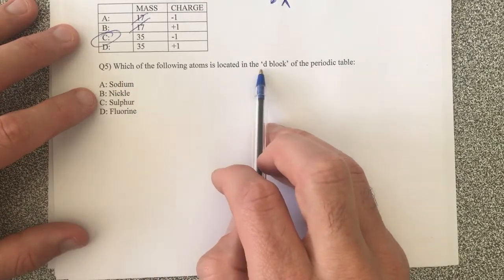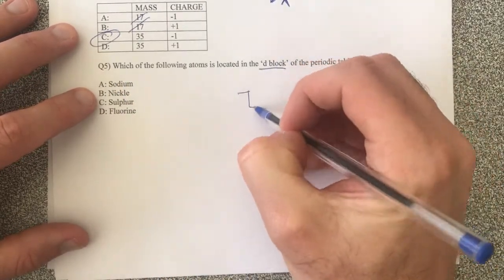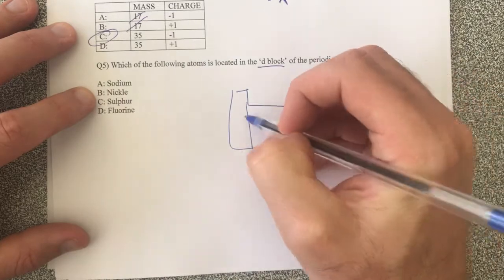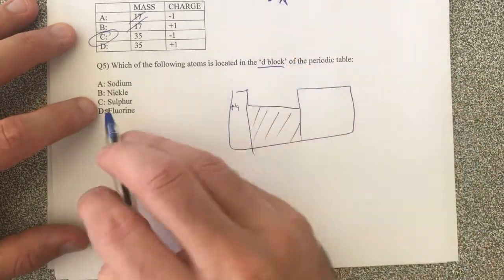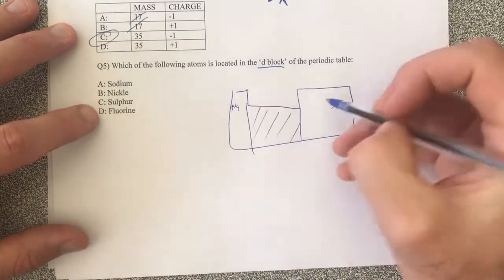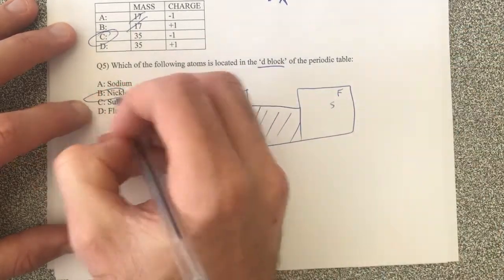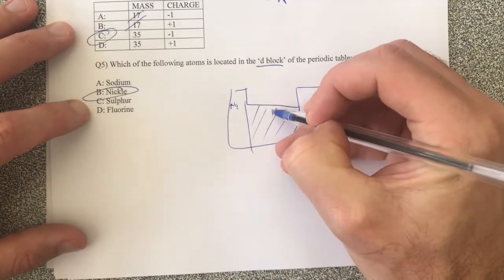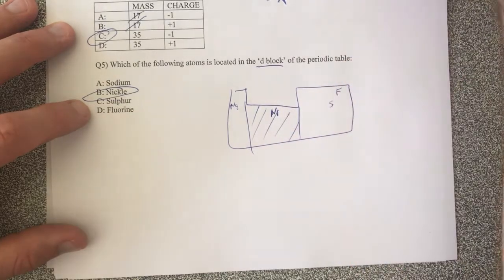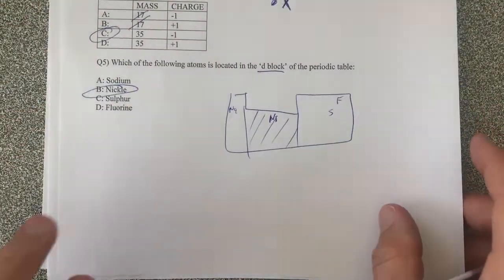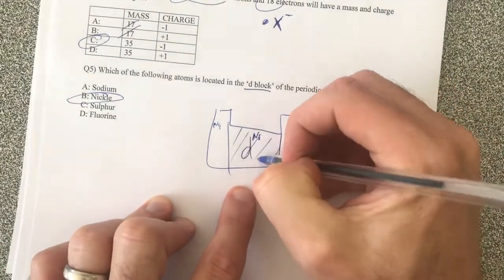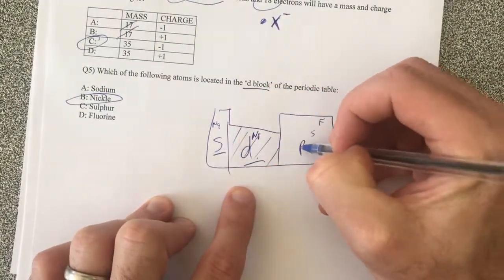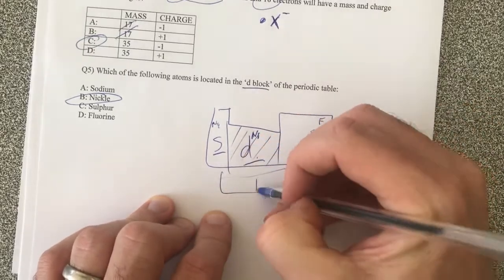Which of the following atoms is located in the D block? D block, if I have my periodic table here, is here. And looking through it, sodium sits here on a periodic table. Sulfur sits over here. Fluorine sits up there. So it's going to be nickel. Nickel sits around about there. And that's just looking at my periodic table. In the test, you will have a periodic table. You don't need to remember this off by heart, but you definitely need to know where the blocks are. And D block is there. S block is there. P block is there. And down here, you've got F block.